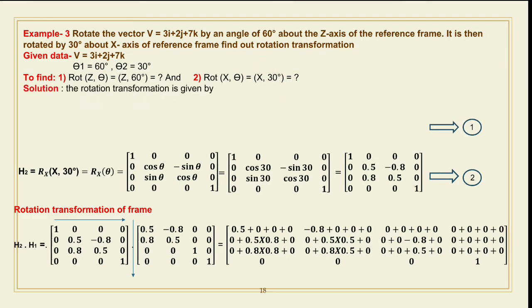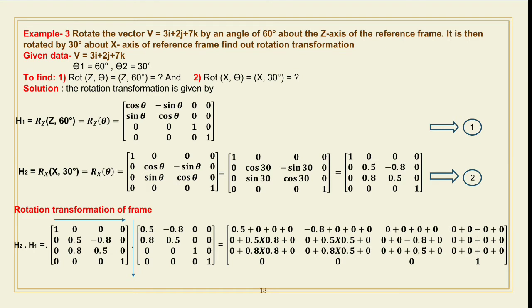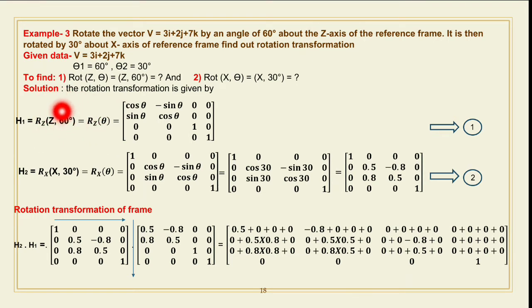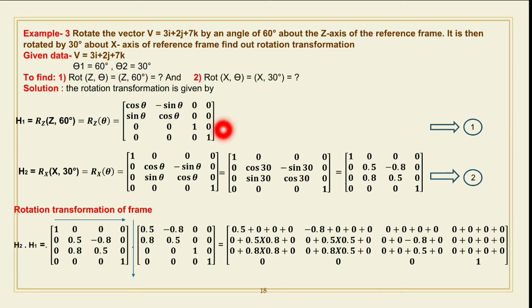The rotation transformation is given by the homogeneous rotation matrix. The first rotation H1 = Rz(60°), meaning rotation about the Z axis at an angle of 60 degrees. The general formula for rotation about the Z axis at angle theta is the 4×4 matrix: [cos θ, −sin θ, 0, 0; sin θ, cos θ, 0, 0; 0, 0, 1, 0; 0, 0, 0, 1].